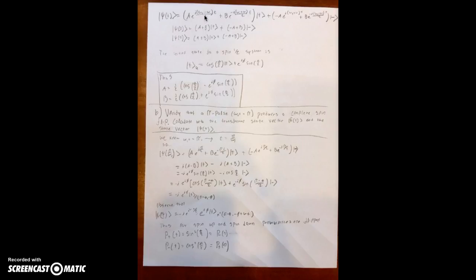We know that the generic initial state for a spin one-half system is this. So using both of those pieces of information, we can solve for A and B. We find that A is equal to this and B is equal to this.